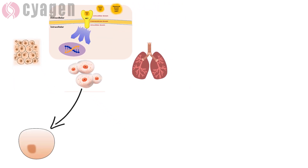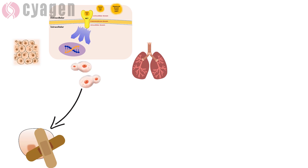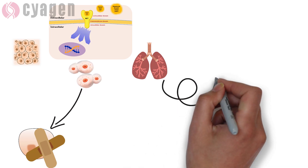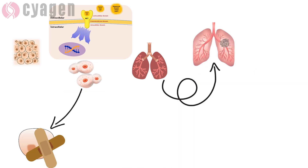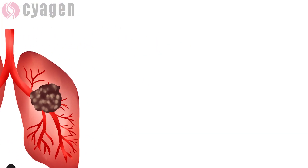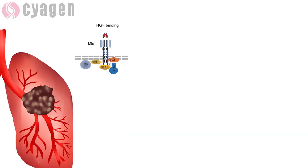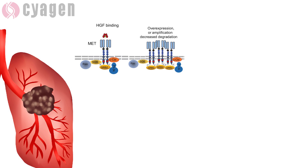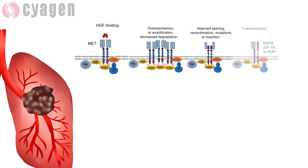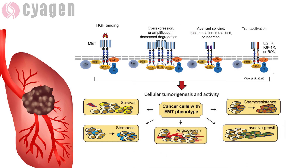When the expression of the c-MET pathway is normal, it promotes the differentiation and repair of tissue. However, when disorders occur in the MET gene, it promotes tumor cell proliferation and metastasis. There are four major categories of MET protein alterations: genetic mutation, amplification, overexpression, and rearrangement.